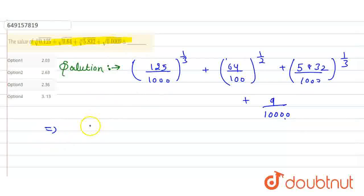I know that 125 is 5 cube. 1000 I can write as 10 cube. I can write 64 as 8 square, and 100 as 10 square. And 5832...